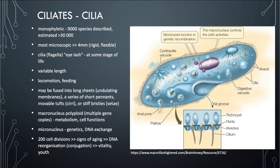Looking at the diagram, ciliates have a mouth called the oral groove where food enters. They even have an anus, designated as the anal pore. They have cilia and digestive vacuoles where food is digested. There is a lot of complexity within this single cell of the ciliate.